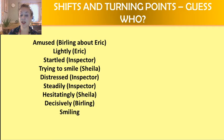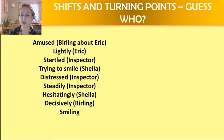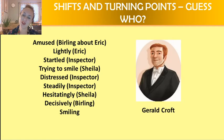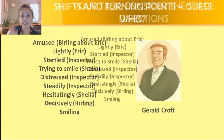Speaking to Sheila hesitatingly, speaking to Mr. Birling decisively. And at the end, this person actually shares a stage direction of 'smiling' with someone else. You can probably use the process of elimination to work out who this is — if you can't think who might be amused, startled, distressed, and decisive. Have you worked it out? Of course, everyone's favourite lad about town, everyone's favourite aristocrat — Gerald Croft. Well done if you got that.